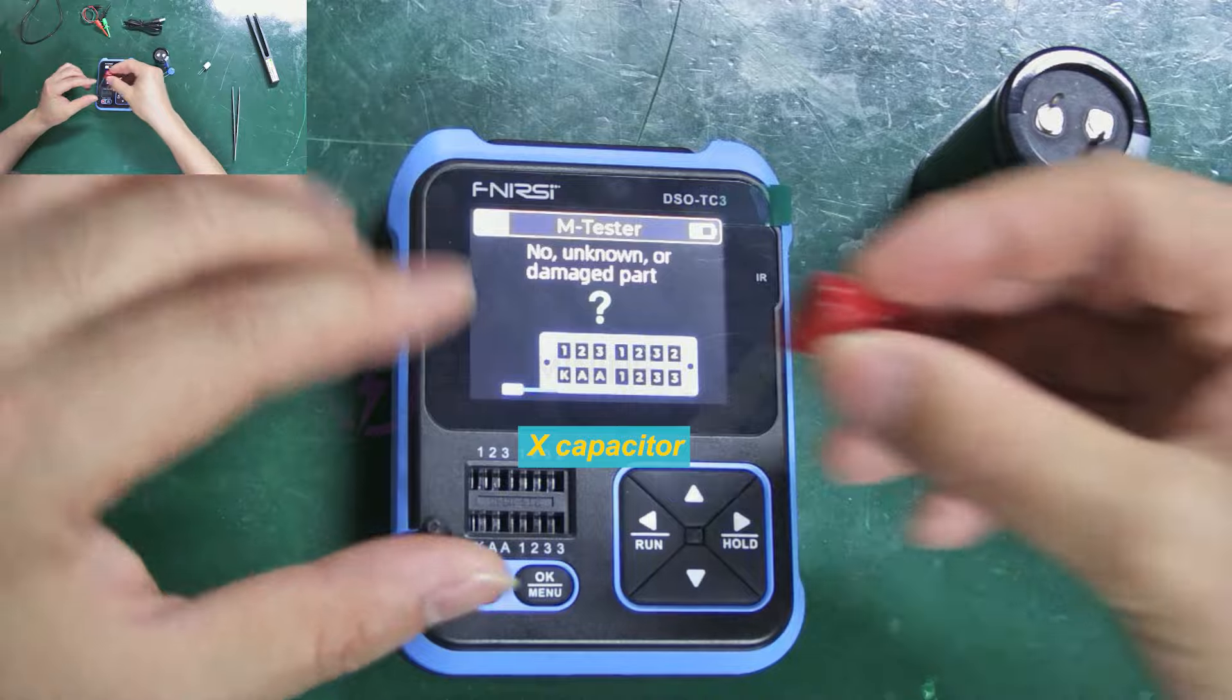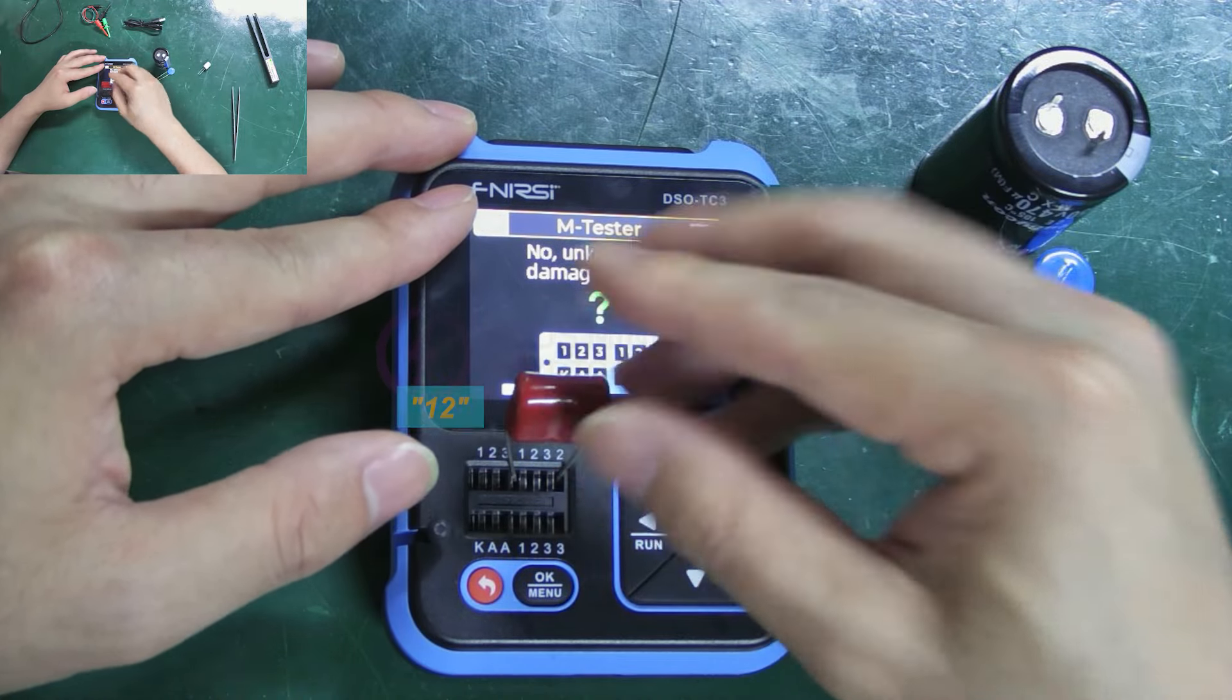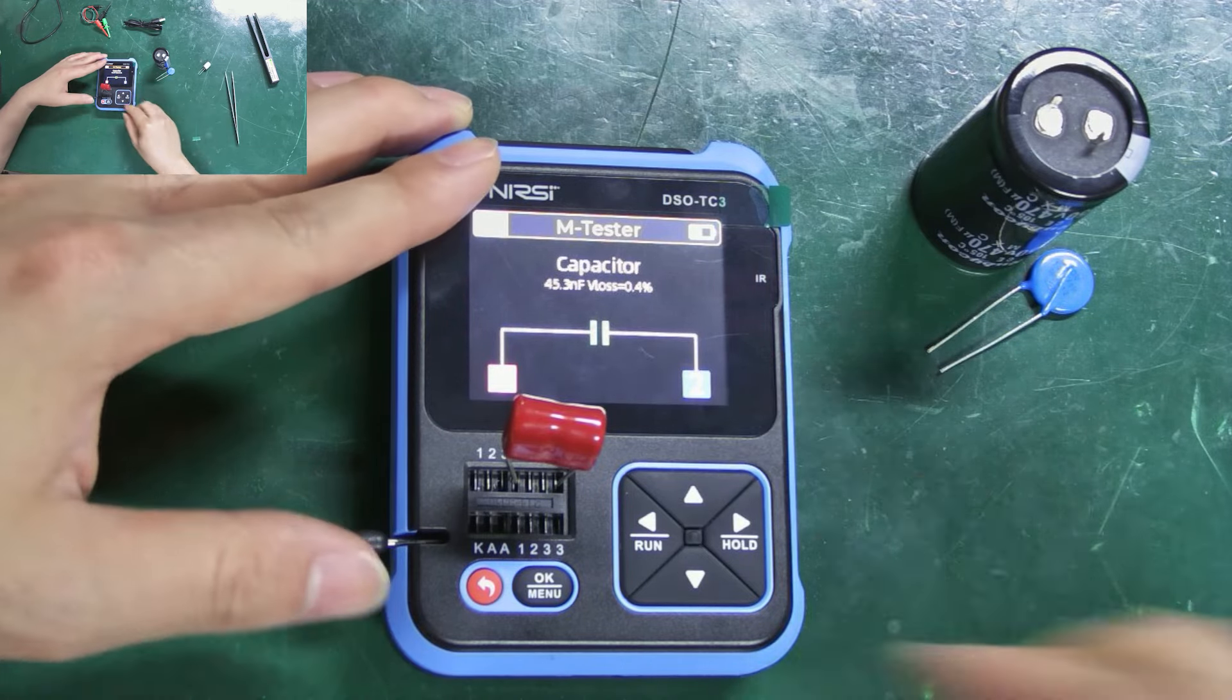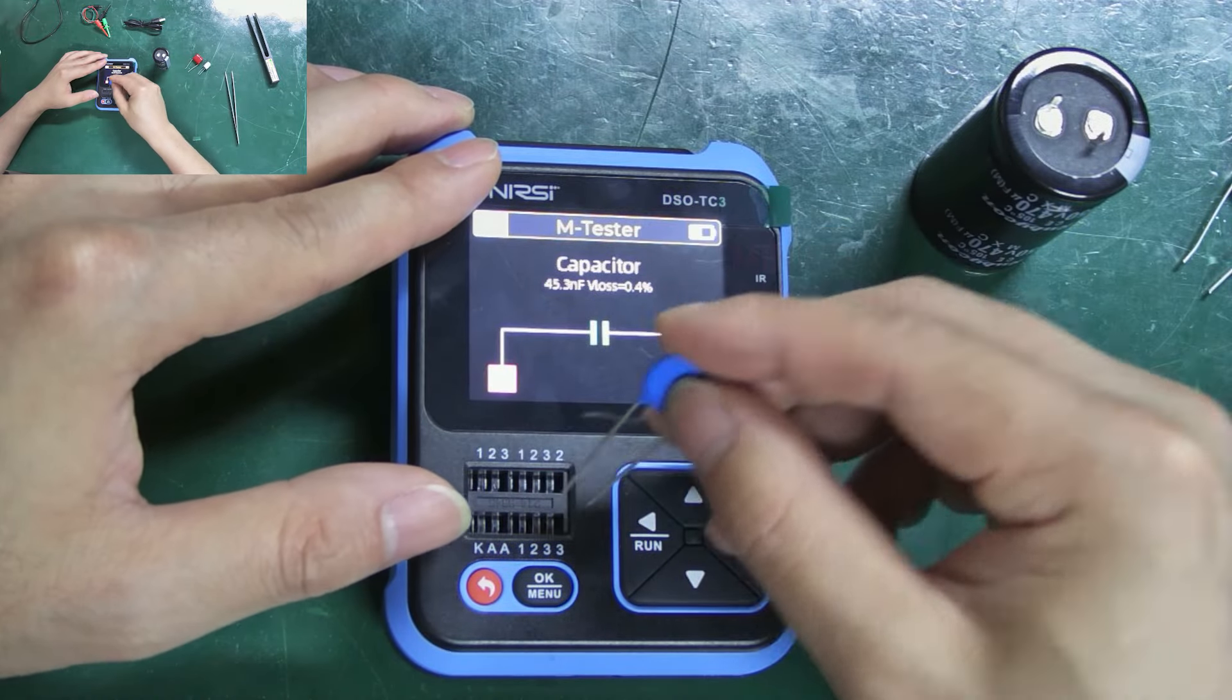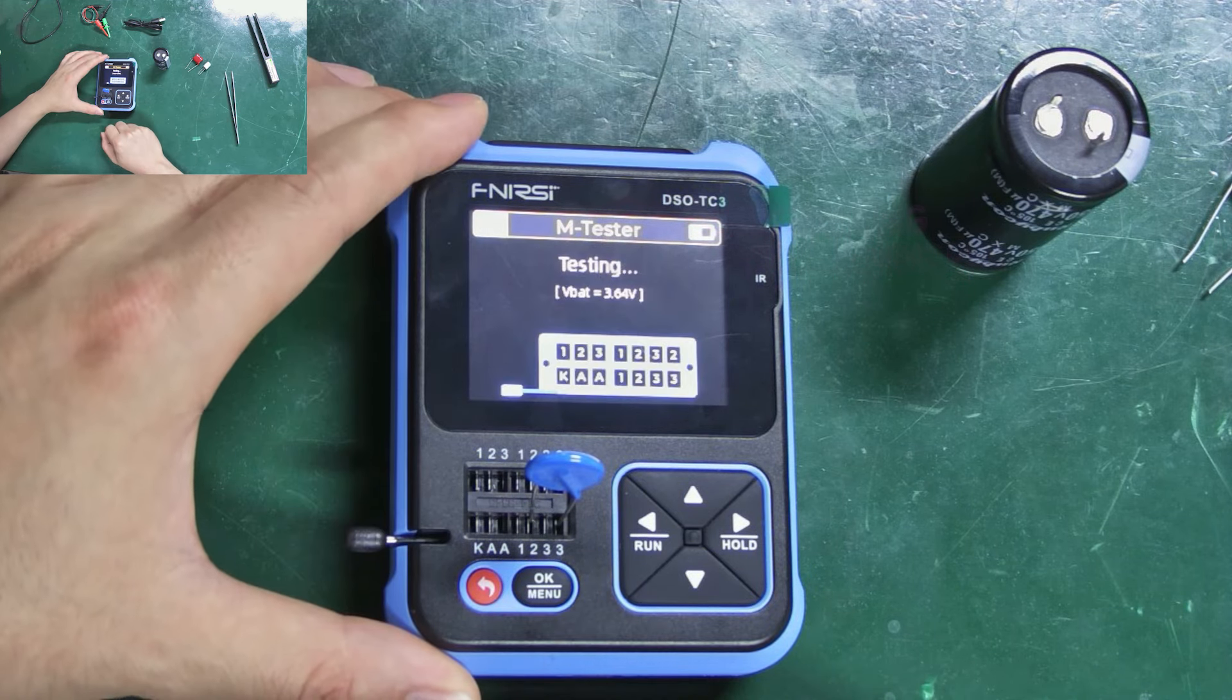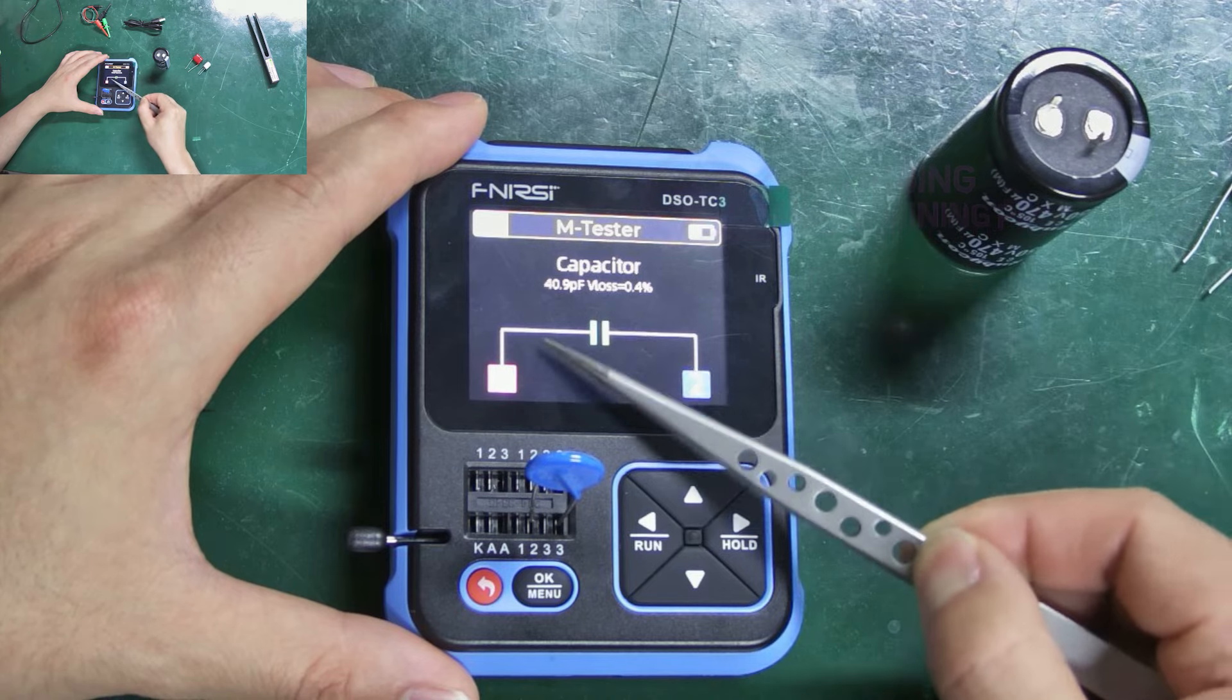Next is the X capacitor. Select one-two to insert. All right, its related info has been detected. Continuing to test the Y capacitor, we can select these two hole positions. It similarly shows its capacity and related information.